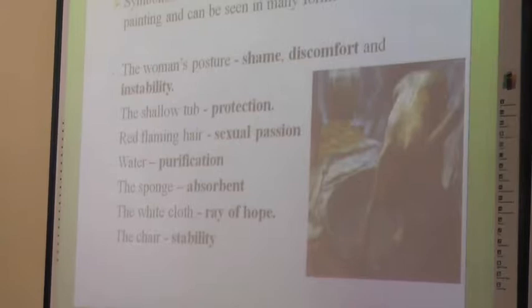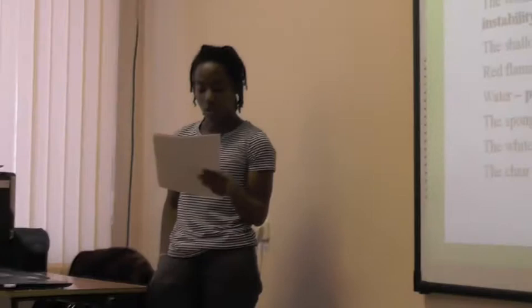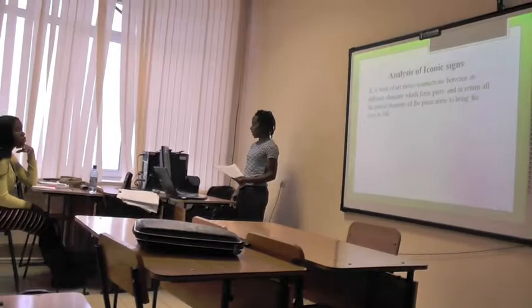The red imagery was found to symbolize joy, sunshine, and happiness, and these attributes unite to bring about the concept of sexual passion and the thirst for action. Water symbolizes purification, sponge and absorbance. White is usually associated with life, goodness, faith, and safety, and as a result denotes the visual concept of a ray of gold. The chair, however, is something rigid and upright, giving the visual concept of stability. The connection between these different elements, which form pairs, and the unity of all elements, bring the story to life.